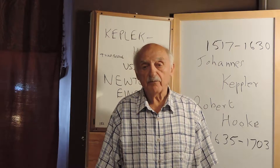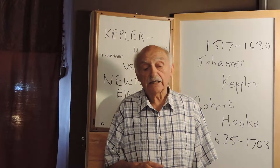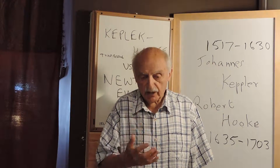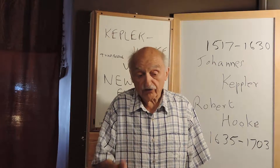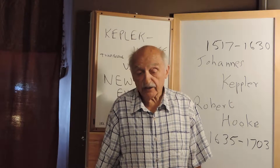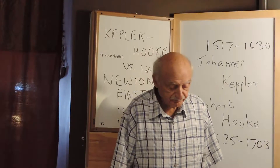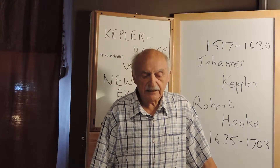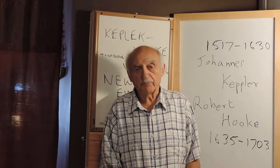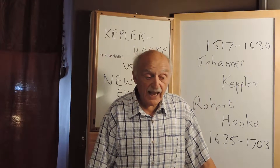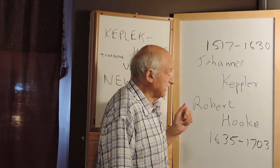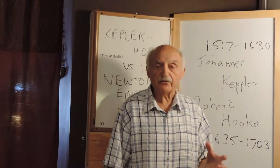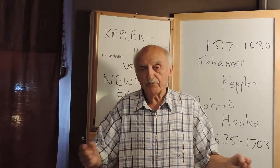Kepler stated that the period squared of an astronomical orbit is inversely proportional to the mass of the central body — so that the Moon's period of orbiting the Earth is proportional to the mass of the Earth, and the Earth's orbital period squared around the Sun is inversely proportional to the mass of the Sun. Hooke said the force exerted by a spring is proportional to the distance, and the equation comes out the same — it's just as if gravity were like expanding space.